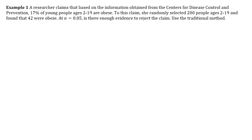Example one: A researcher claims that, based on information from the CDC, 17% of young people ages 2 to 19 are obese. To test this claim, she randomly selects 200 people and found that 42 were obese. Alpha is 0.05. Is there enough evidence to reject the claim? Use the traditional method.